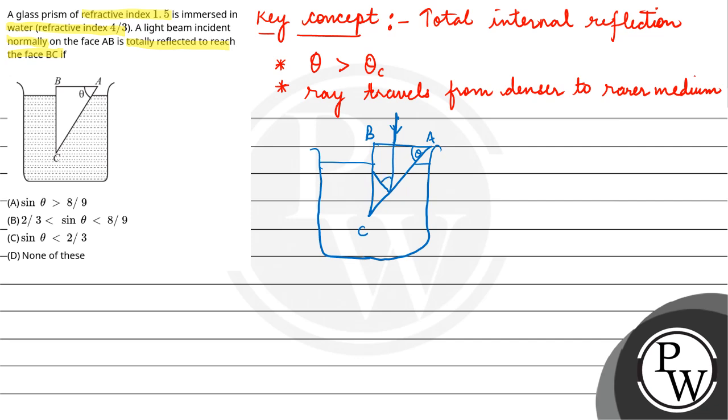So this angle will also be theta. Why? Because the angle between two sides is equal to the angle between their perpendiculars. This line is perpendicular and this line is perpendicular. So we can say that the angle of incidence is theta because it is totally reflected.